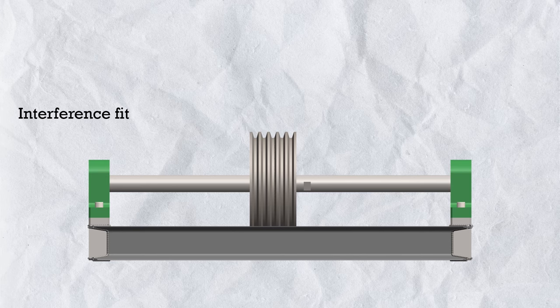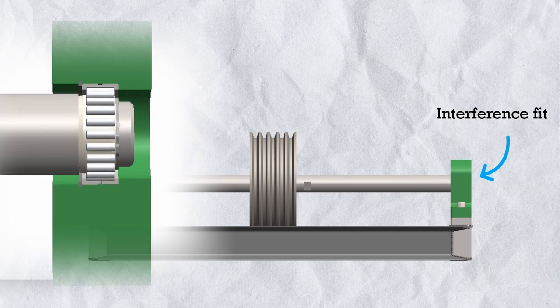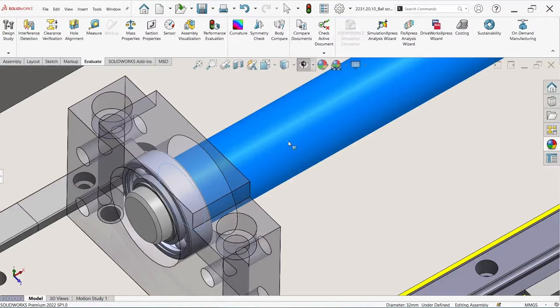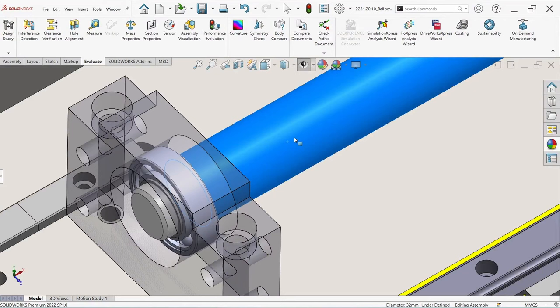Which solution is better? In applications where interference fit is required for both rings, use bearings that allow axial displacement within the bearing, though these are slightly more expensive. In a float-type arrangement a simple bearing can be used, but the axial movement of the bearing on its seat can induce axial load that may impact bearing service life, so additional design considerations must be taken into account.